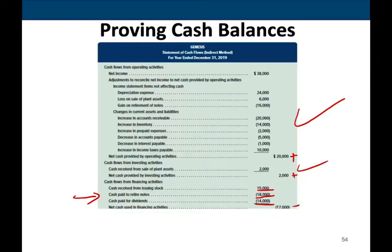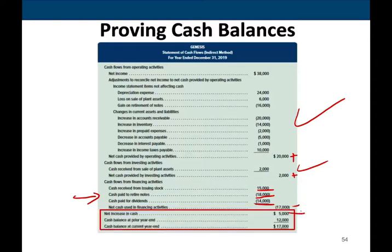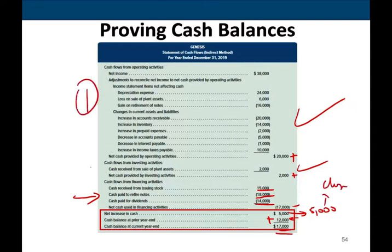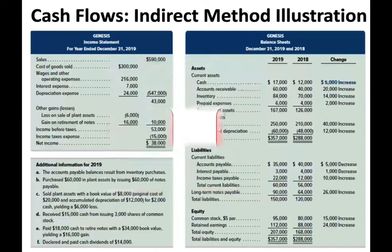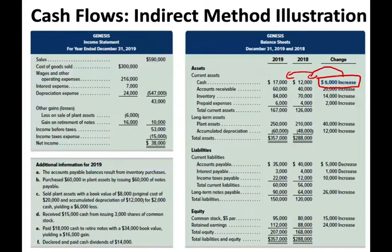Let's recap what we did over the past three sessions. The first session looked at the operating section; the second prepared the investing section; and this session covered financing — issuing stocks, paying off debt, and paying dividends. The net result: plus $20,000, plus $2,000, minus $17,000, which nets out to $5,000. Adding that $5,000 change to the prior year beginning cash balance of $12,000 gives us the current year ending cash balance of $17,000.